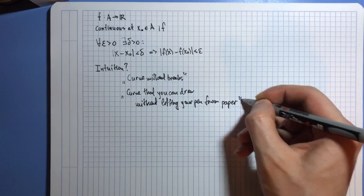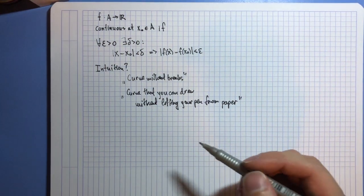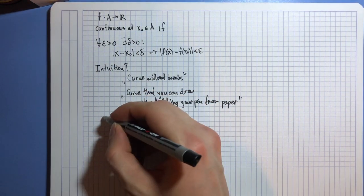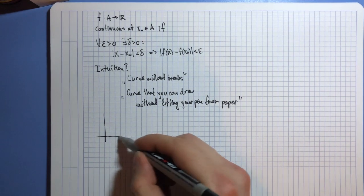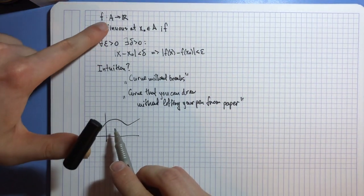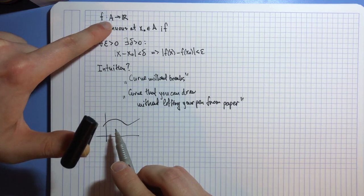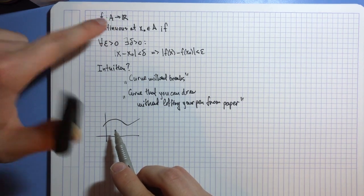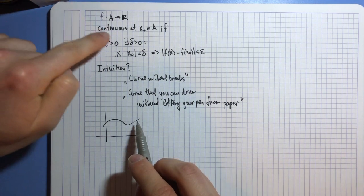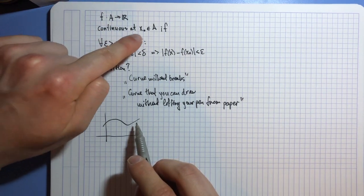And when it came down to imagining this kind of function graphically, you would always assume that this function looks something like this. If my function is continuous at many points or perhaps at all points in A, then it looks something like that.